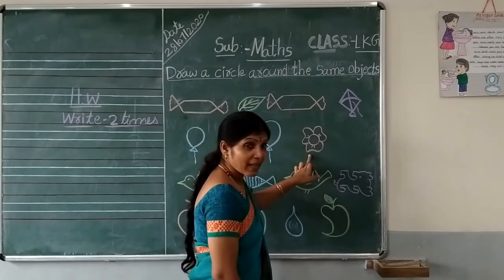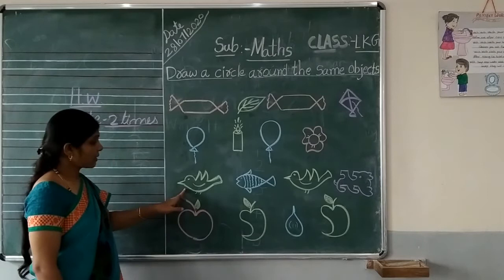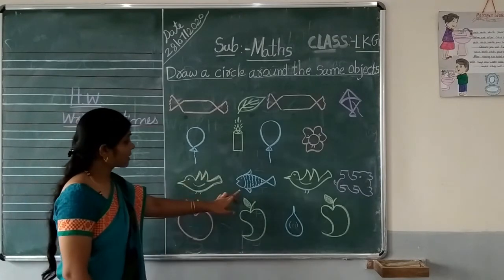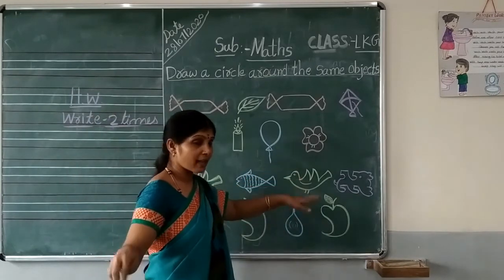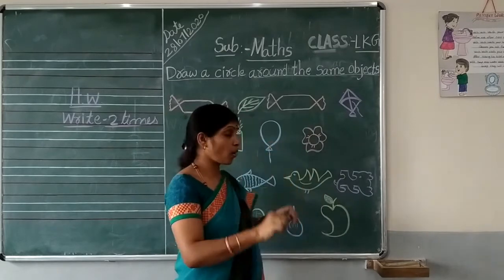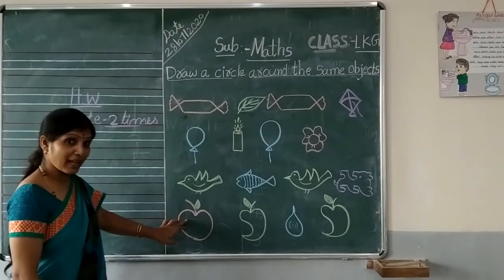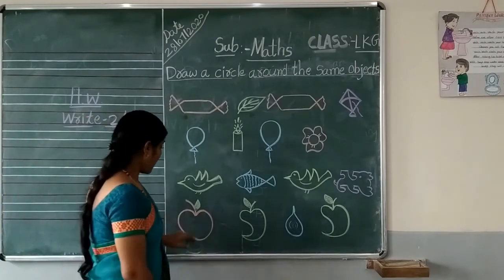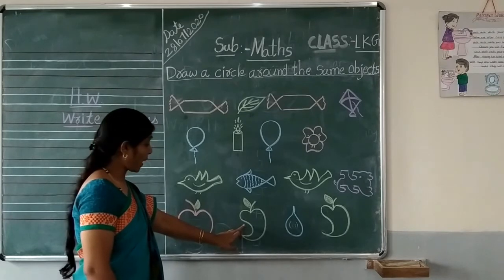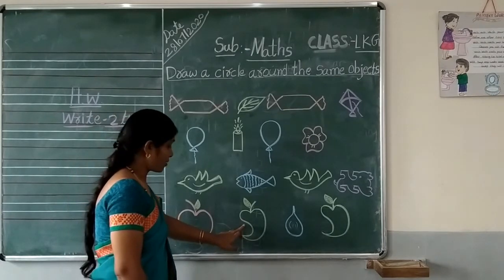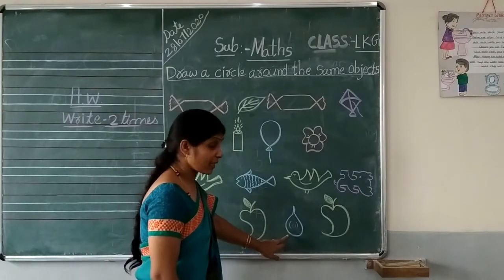Next, flower. This is flower. Next, this is bird. Next, this is fish. Next, this is bird. And this is low. Next, this is apple. You like apple? Yes. Apples are good for health.